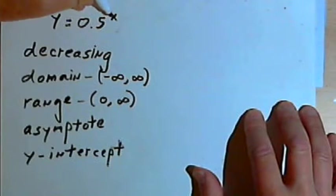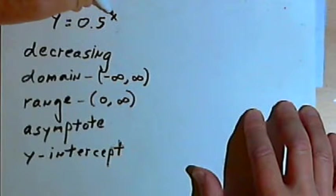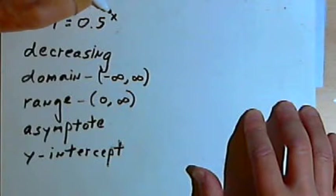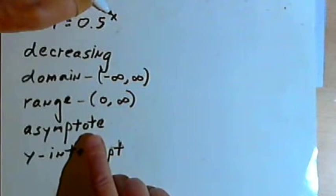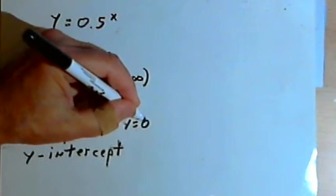Since we can never have this equal 0, but it can become a very small number. When x is very big, 0.5, or 1 half, raised to that big number is going to be a very small fraction. That means we're going to have an asymptote at y equals 0. It will get very close to the x-axis, but it won't touch it.